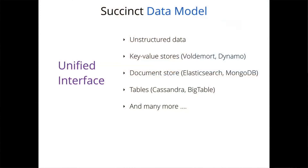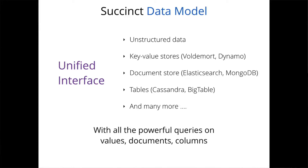I'm going to focus on Succinct's data model and how it enables a large number of different data models through its unified interface. This means we can cater to data that could be unstructured flat files, key-value stores, document stores, columnar representations, or even tabular representations. Succinct enables us to run the same powerful primitives — search, regular expressions, range operations — on whatever the unit of data is for that data model, whether it's values, documents, or columns.